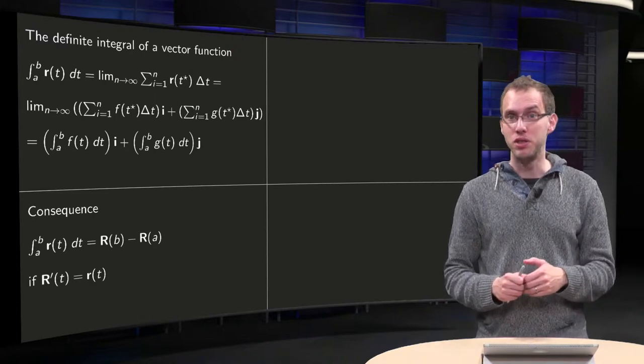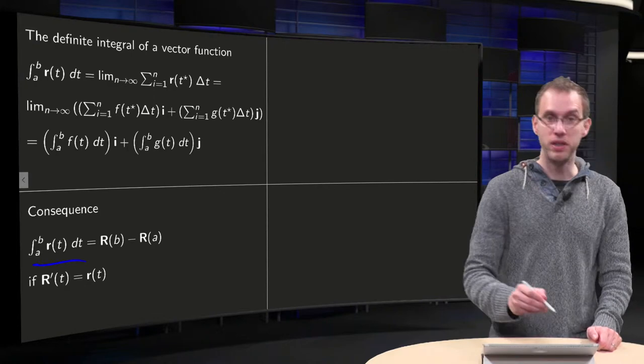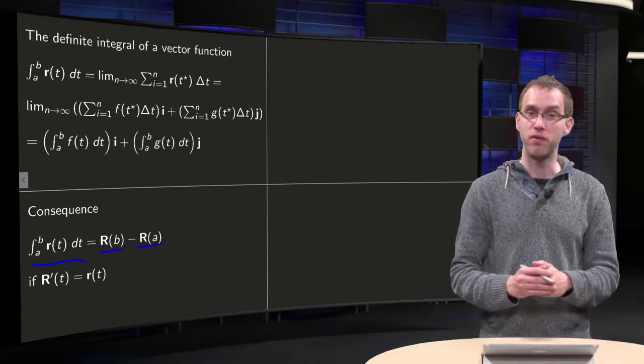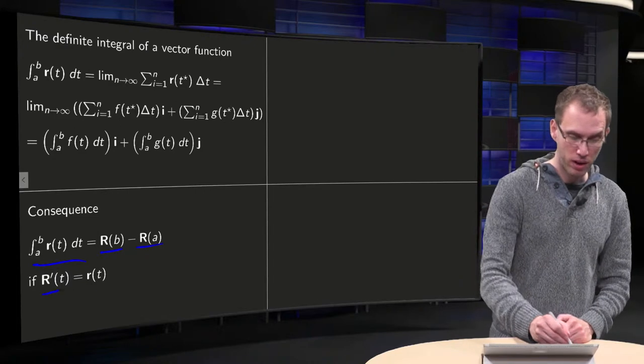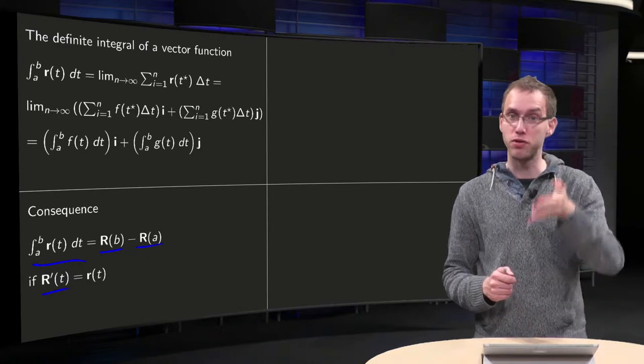As a consequence, you can use the main theorem of calculus. So, this integral from a to b is just R(b) minus R(a), where R prime consists of the antiderivative of the components of r.